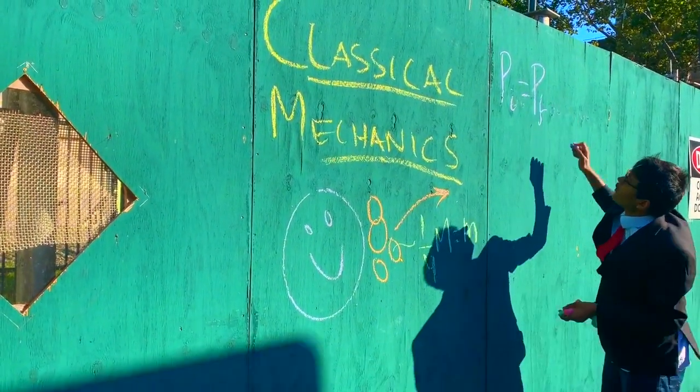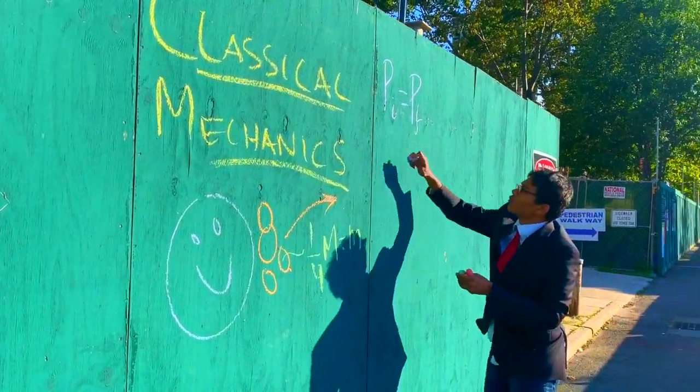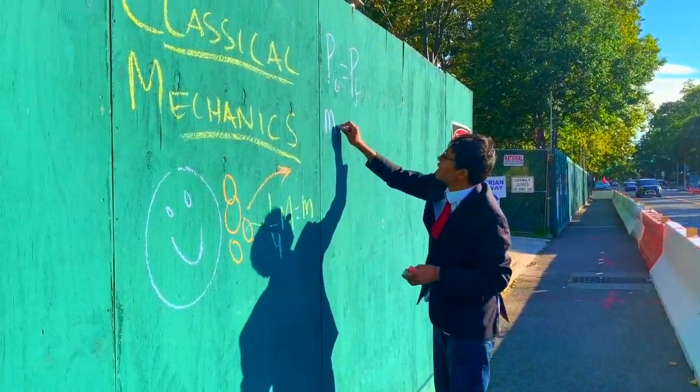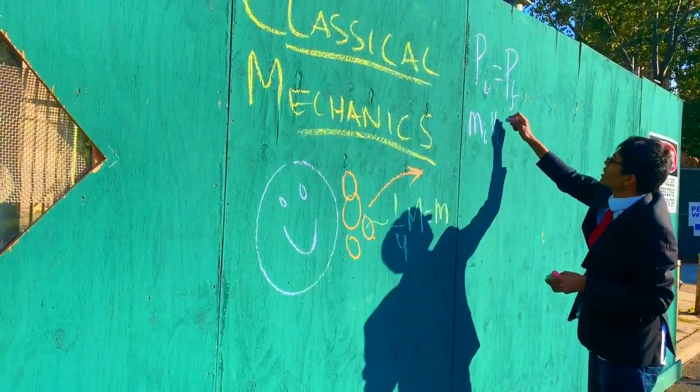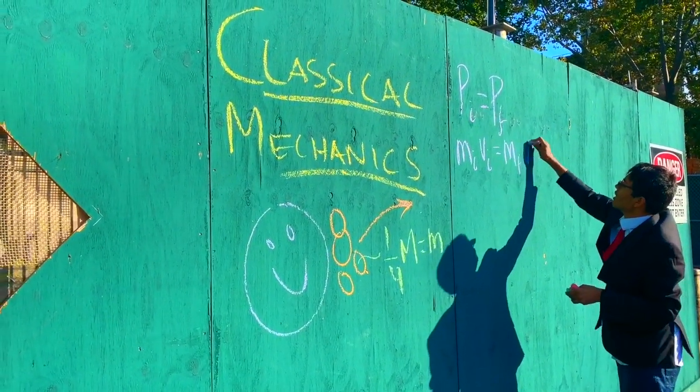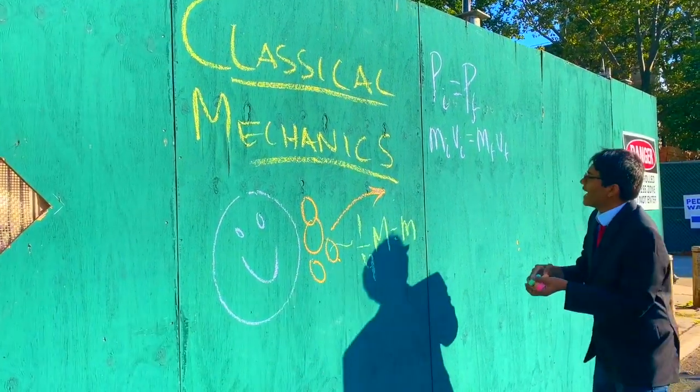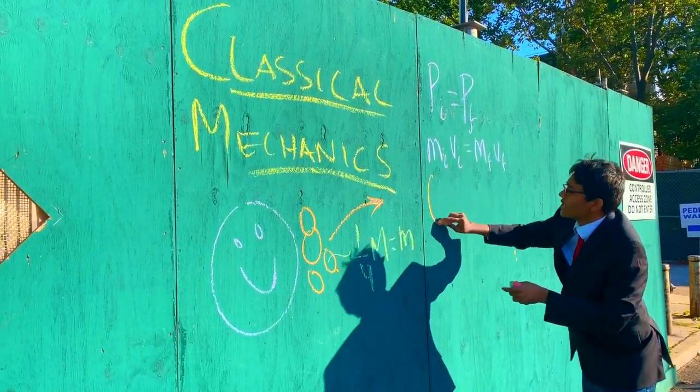What is momentum initial? Momentum initial is going to be the mass of the astronaut times the original velocity of the astronaut. What about the momentum final? That's going to be the mass of all the rocks and the velocity of all the rocks.